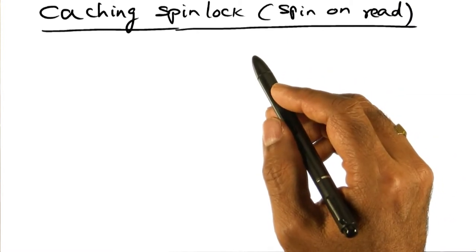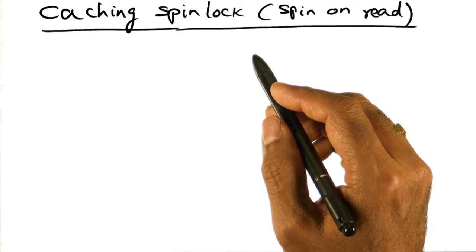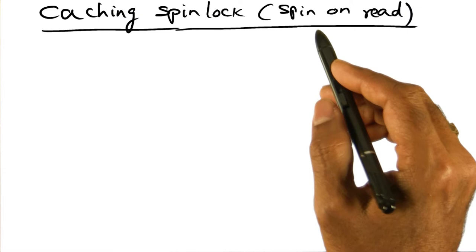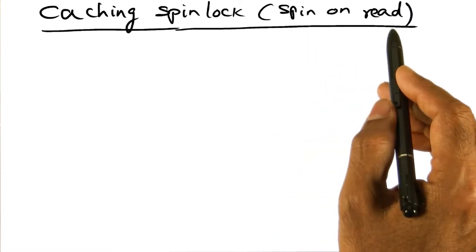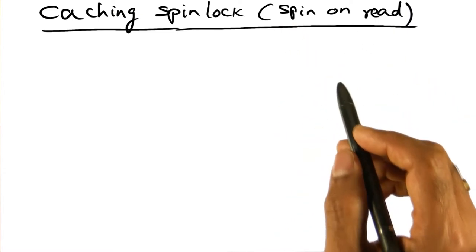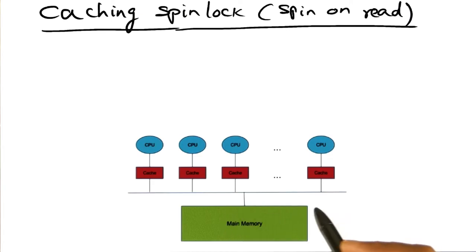But on the other hand, the guys that don't have the lock could in fact exploit the caches in order to wait for the lock. And that's why this particular algorithm that I describe to you is what is called spin on read. And the assumption here is that you have a shared memory machine in which the architecture is providing cache coherence.